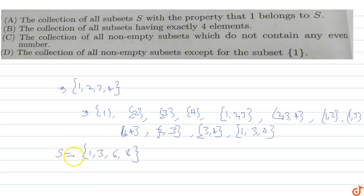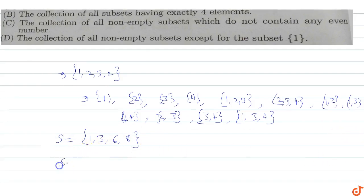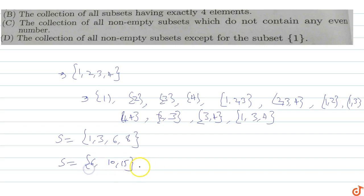So it is not compulsory that 1 is belonging to S. For example, suppose S is the subset {6, 10, 15}. All subsets are included in this set, so we can say that this S is a simplex set. Therefore, it is not compulsory that 1 is included in this set, making Option A incorrect.